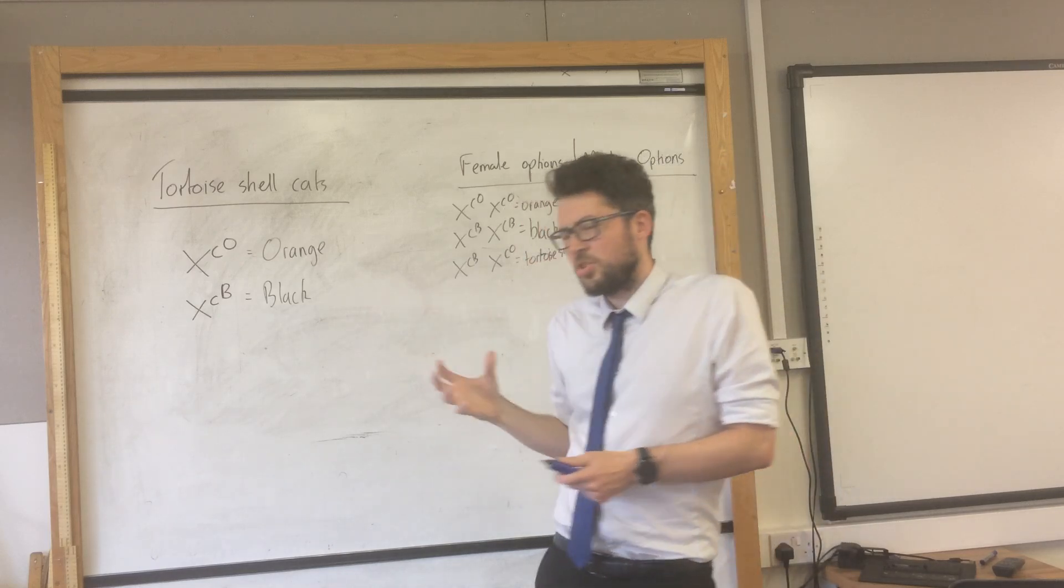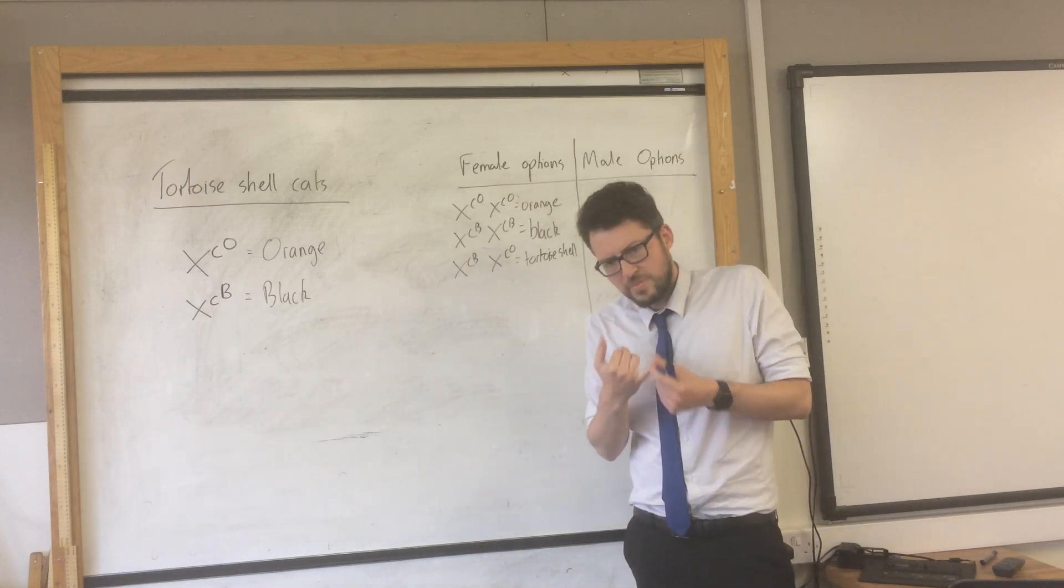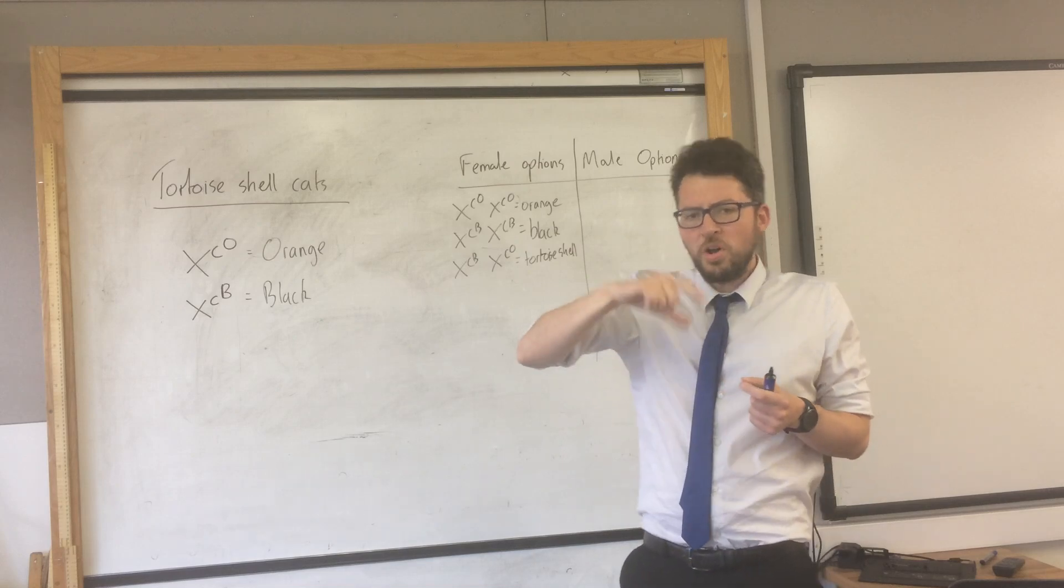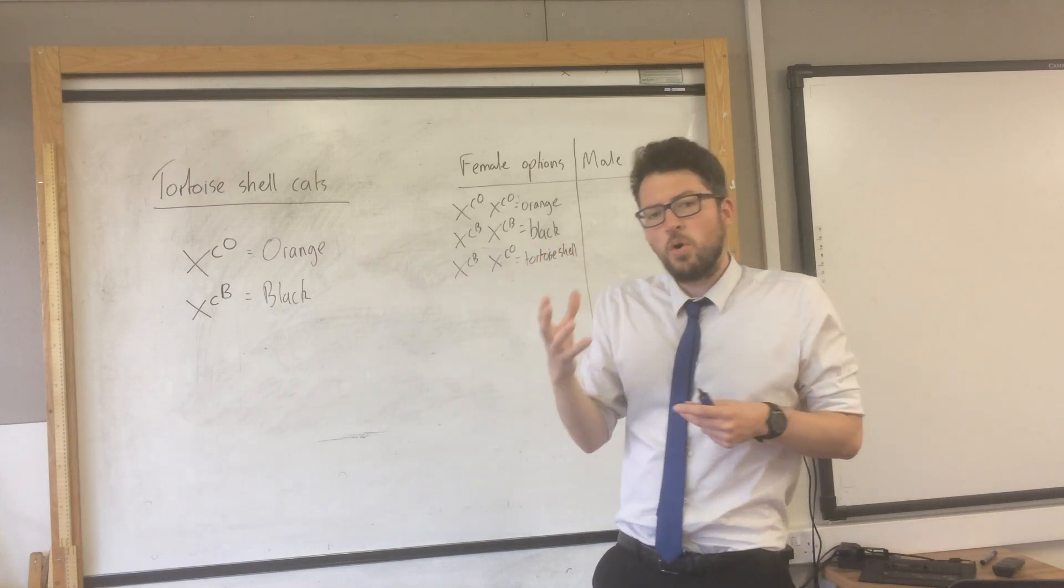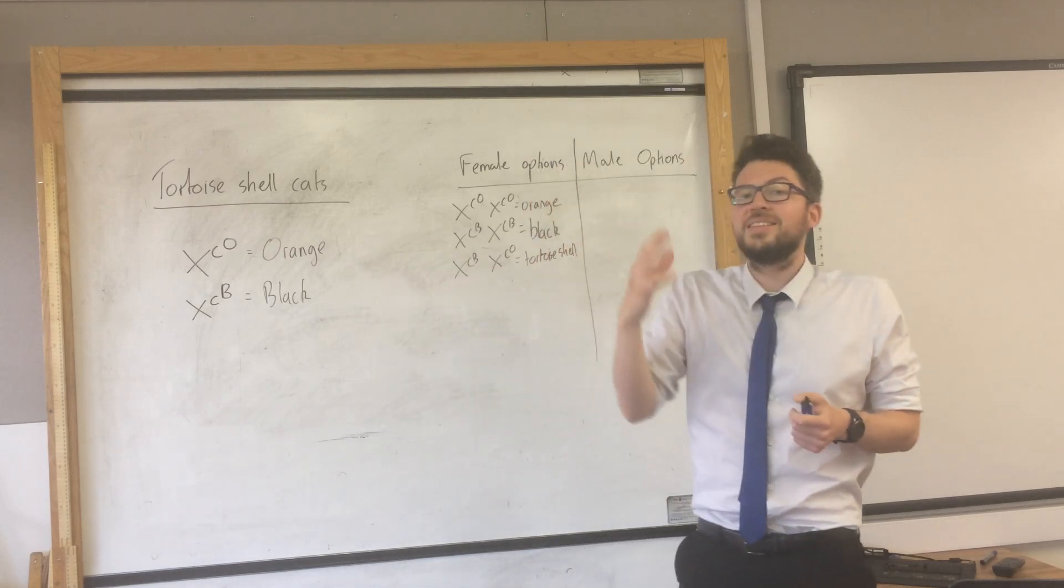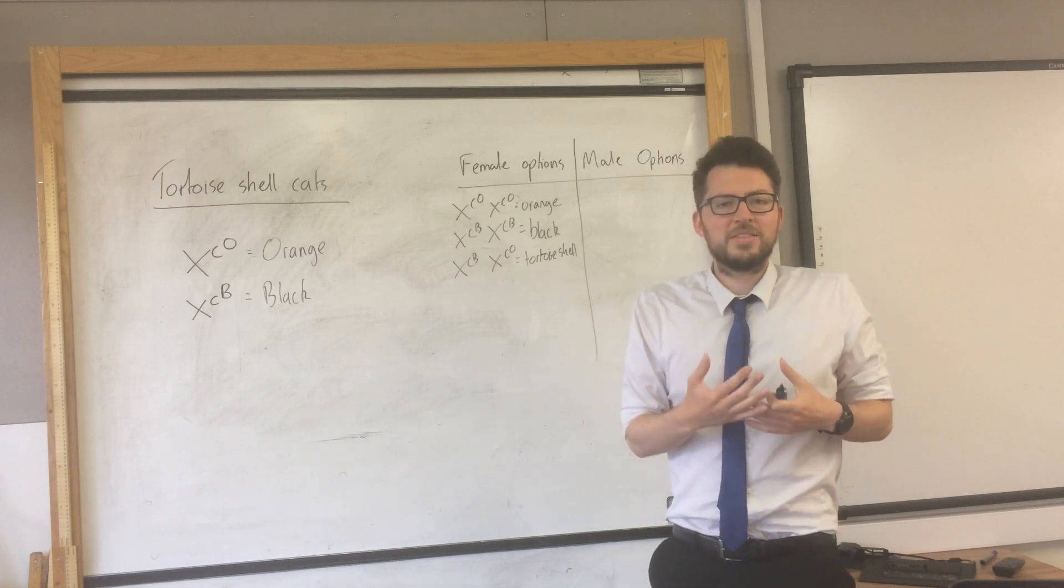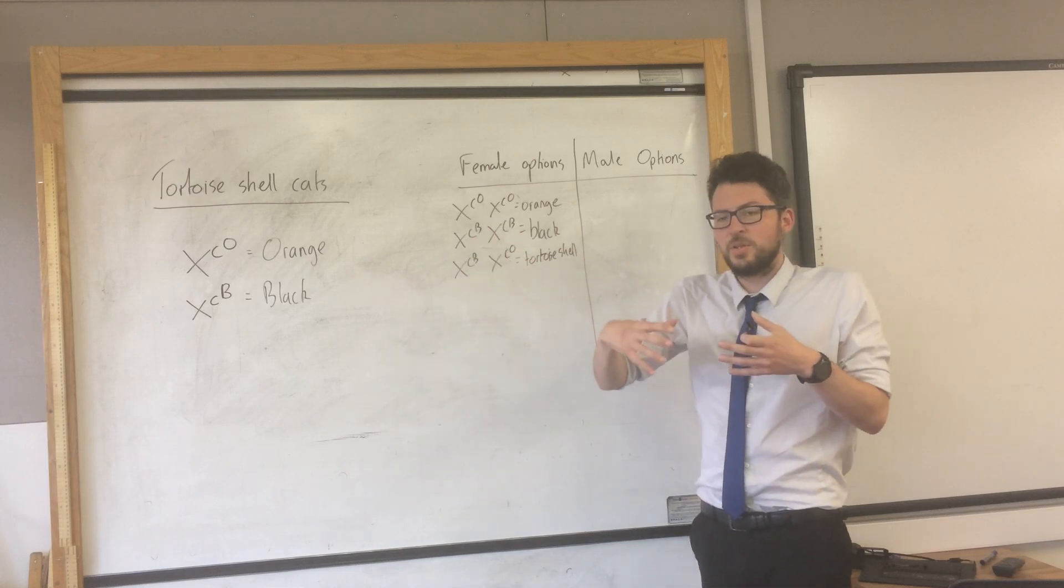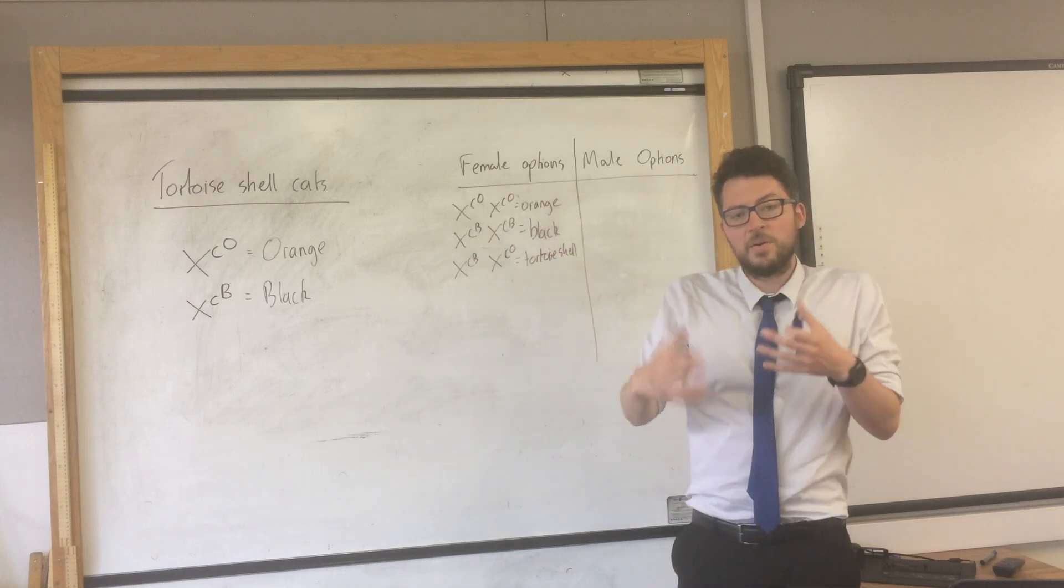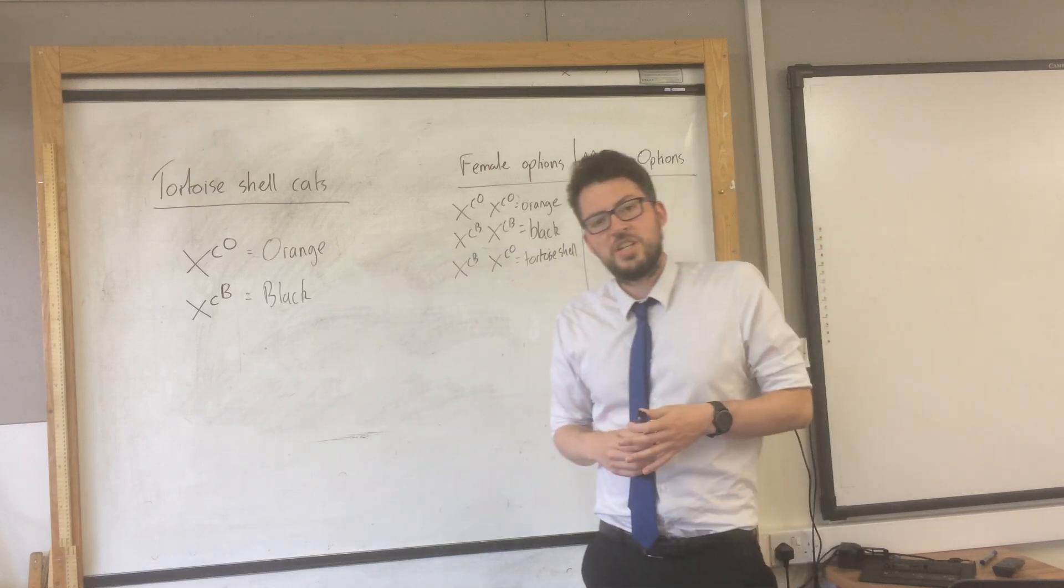And the reason they are tortoise shell comes on to another thing which is that in mammals, in female mammals, one of the X chromosomes in every cell switches off. So only one X chromosome in a female per cell is active. So that means that depending on whereabouts in their body, the X chromosome switches off, some of the cells will appear to be black, some of the fur will appear to be black, and some will appear to be orange, giving them that tortoise shell effect.